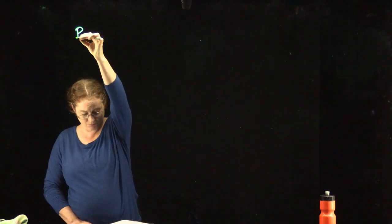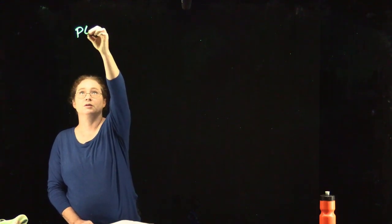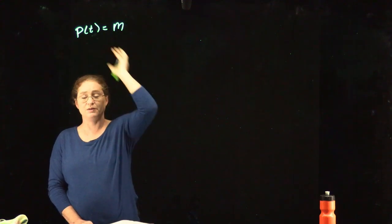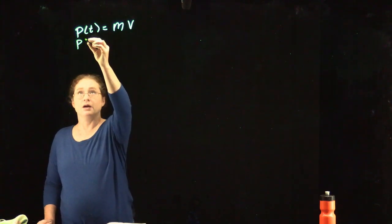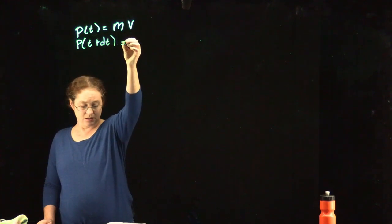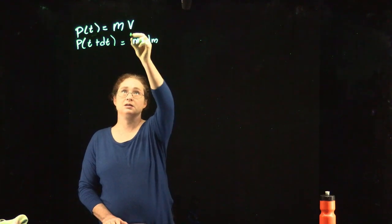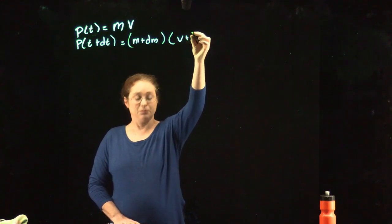So far we've considered only cases where mass is constant, but now we're going to consider rockets. Rockets work by ejecting mass, and because momentum is conserved, as the rocket ejects mass, the thing you're trying to propel moves forward. We're going to start with the momentum as a function of time: p(t) equals m times v. If we look at the momentum at time t plus dt, this is going to be m plus dm times v plus dv.